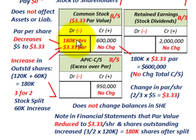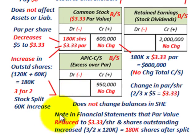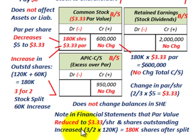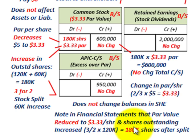Same as for the stock dividend, the number of shares issued increases. The increase in shares reduces the par value per share. The key thing you must note in your financial statements is that the par value has been reduced to $3.33 per share from $5, and the shares outstanding have increased. Using the fractional amount — 3/2 × 120,000 — you now have 180,000 shares after the split. You have to put this into your financial statements as a note showing the reduction in par value per share and the increase in shares outstanding. For splits, nothing is transferred from earned equity into paid-in capital.